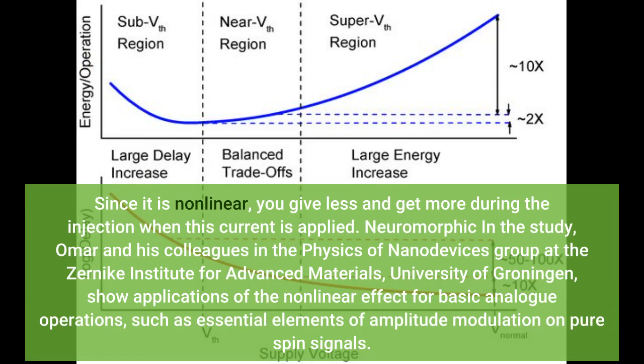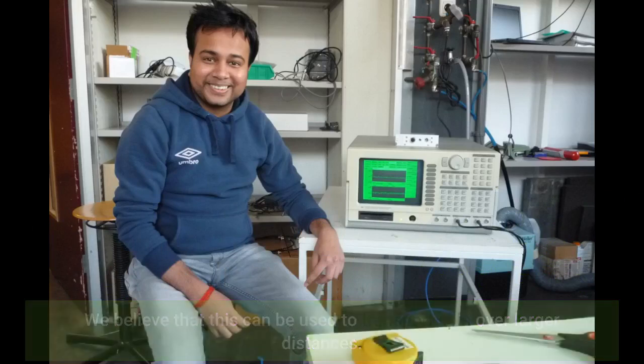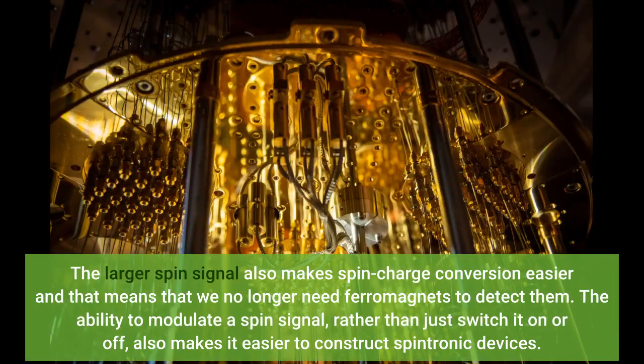Omar and his colleagues in the Physics of Nanodevices group at the Zernike Institute for Advanced Materials, University of Groningen, show applications of the nonlinear effect. We believe that this can be used to transport spin over larger distances. The larger spin signal also makes spin-charge conversion easier, and that means we no longer need ferromagnets to detect them. The ability to modulate a spin signal, rather than just switch it on or off, also makes it easier to construct spintronic devices.